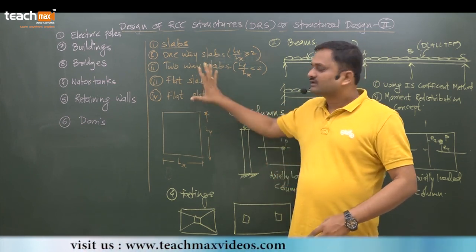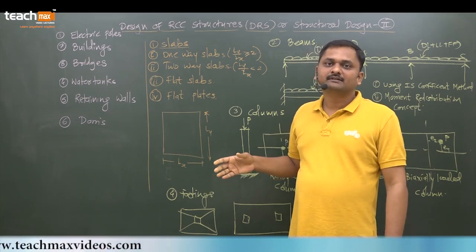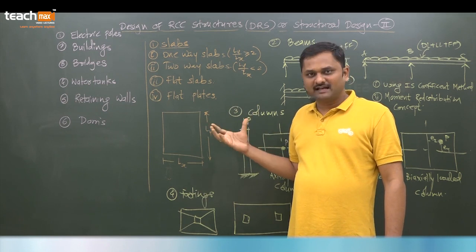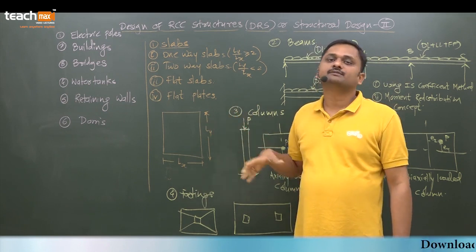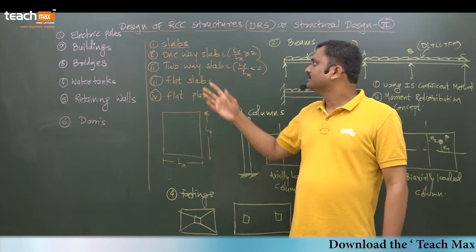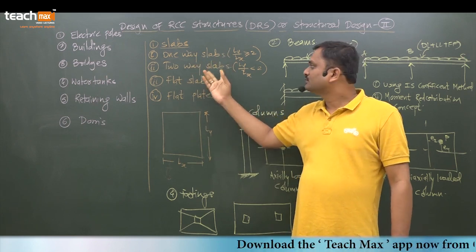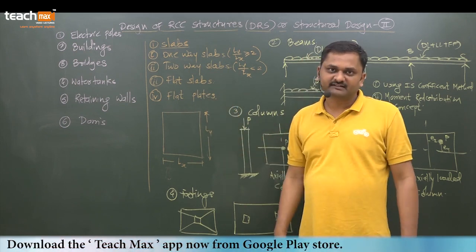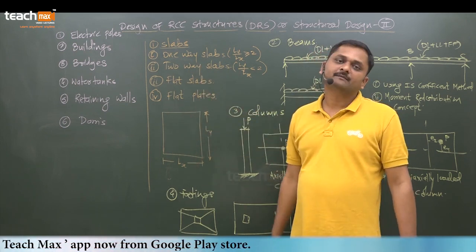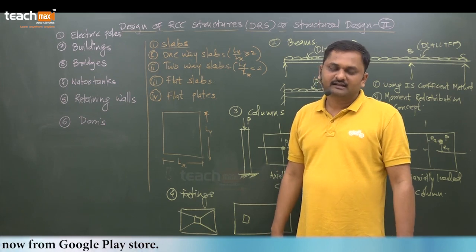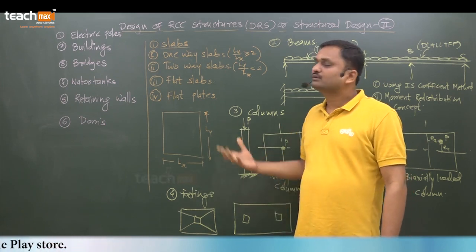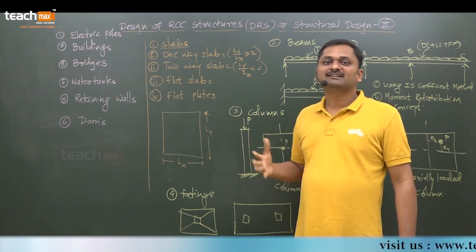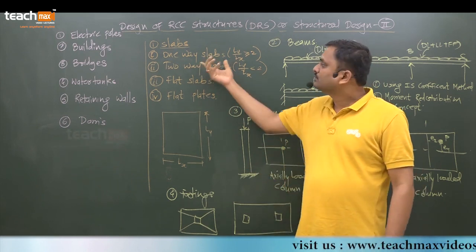We can categorize the slabs based on the longer to shorter dimension of the slab as well as the reinforcement provided in it. There is one-way slab, two-way slab, flat slab, and flat plate in RCC. If the ratio of longer dimension to shorter dimension is greater than or equal to two, we go with one-way slab.